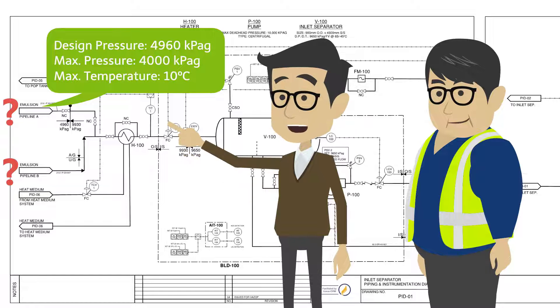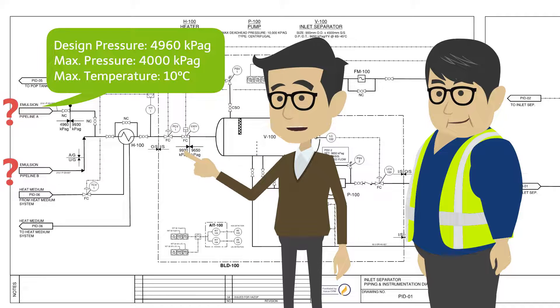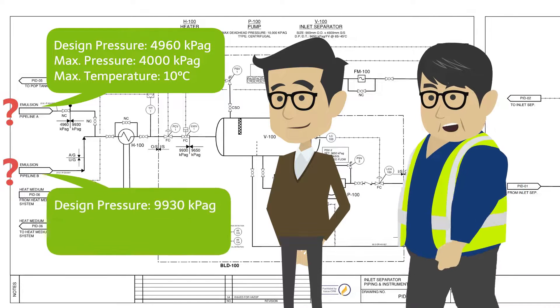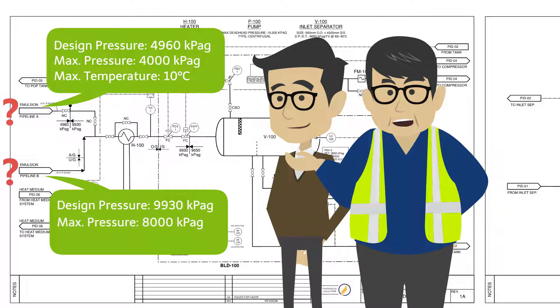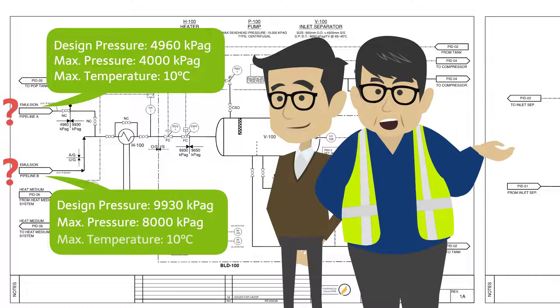And what about the maximum incoming pressure and temperature from pipeline B? The design pressure of the pipeline is 9,930 kPaG, but the maximum incoming pressure we would ever see is 8,000 kPaG, with a maximum incoming temperature of 10 degrees Celsius.